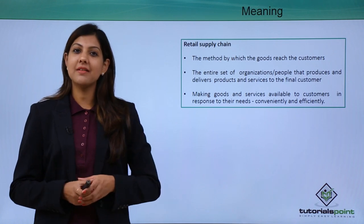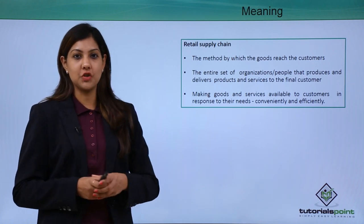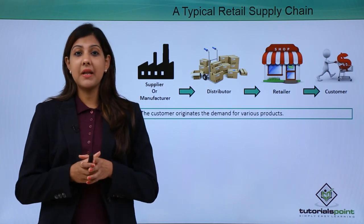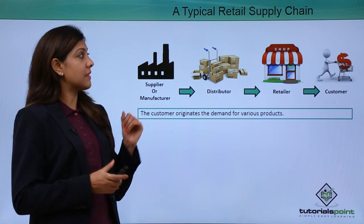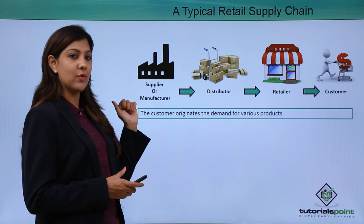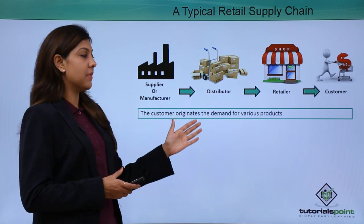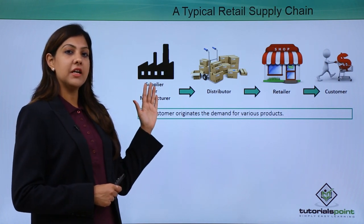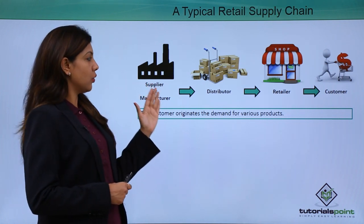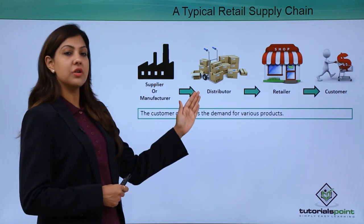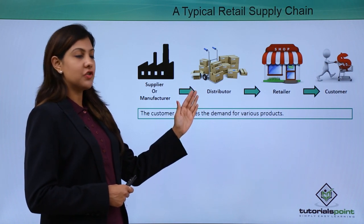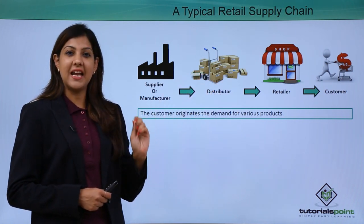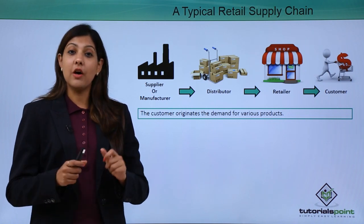A typical retail supply chain looks something like this: the customer originates the demand for various kinds of products. There is a supplier or manufacturer of the product, which then goes to the distributor. After the distributor, it goes to the retailer, and from there it goes to the final end user, who is the customer.